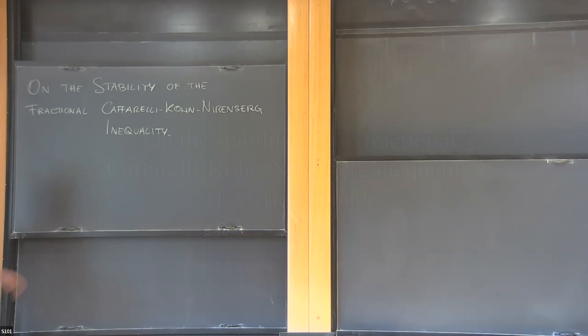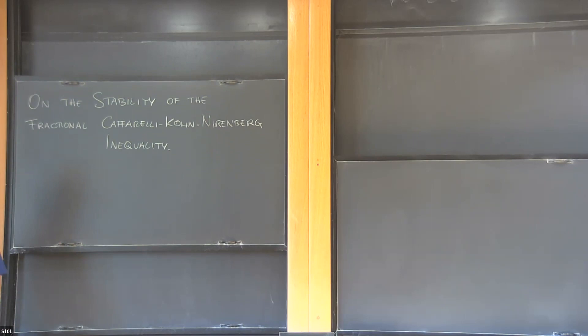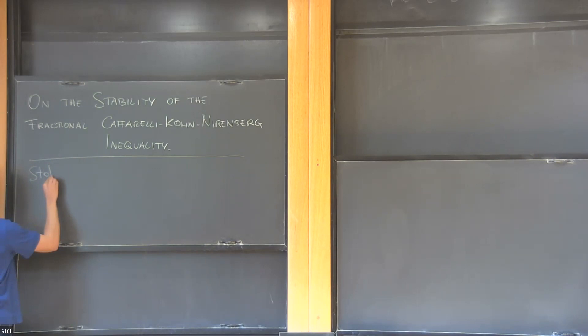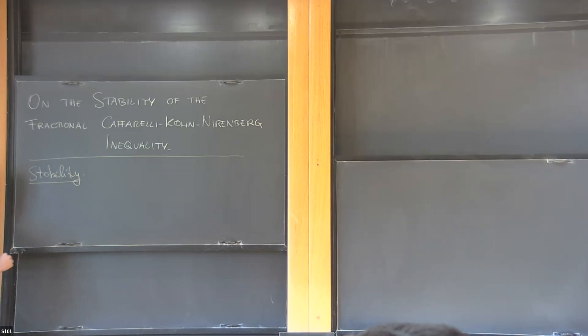Thank you very much to the organizers. Today I'll give a general introduction to the stability of inequalities, presenting a general framework and then trying to apply it to the fractional Caffarelli-Kohn-Nirenberg inequality. This is ongoing work with collaborators Nicola De Nitti and Tobias Conigli. Let us start with a very simple example designed to show the structure we want to study.